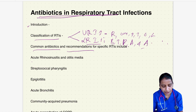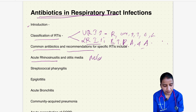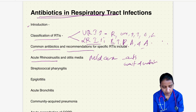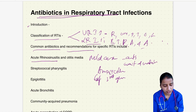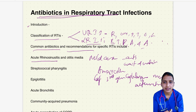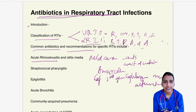Starting with acute rhinosinusitis: in mild cases, antibiotic is not required — you can wait and watch and treat according to the symptoms. In severe or complicated cases, amoxicillin is the first line. Third generation cephalosporins may be alternatives, especially in penicillin-allergic patients and non-compliant cases. A short course of five days is effective.